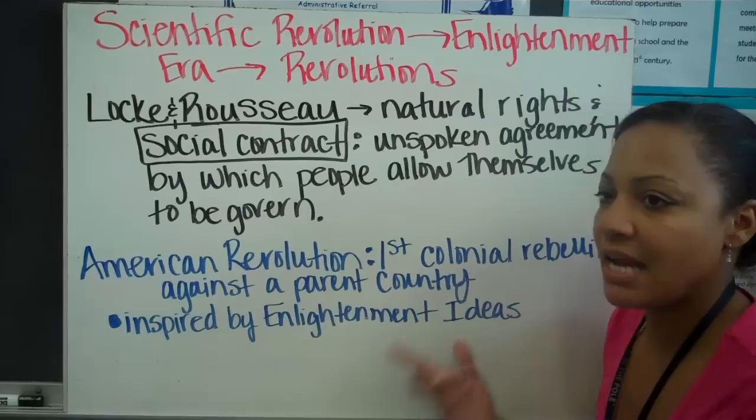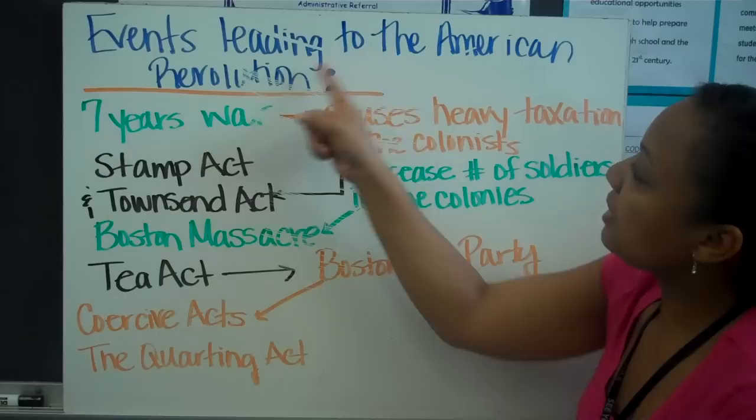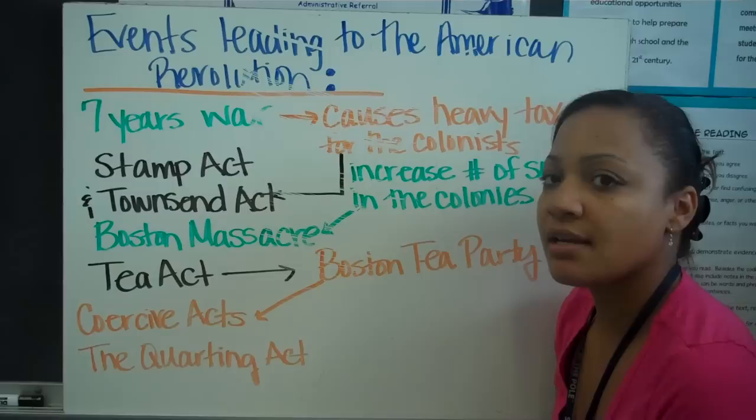The American Revolution was inspired by the Enlightenment ideals of natural rights, social contract, and fairness. I do apologize about the board — it got messed up in the movement. But let's look at the events leading to the American Revolution.